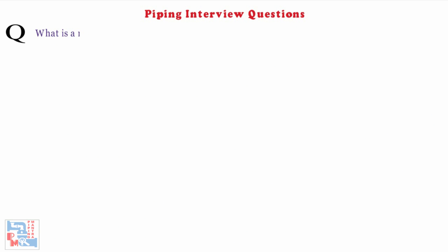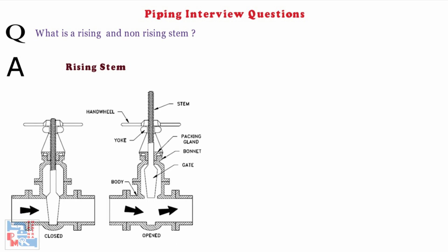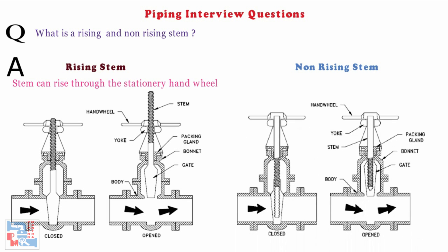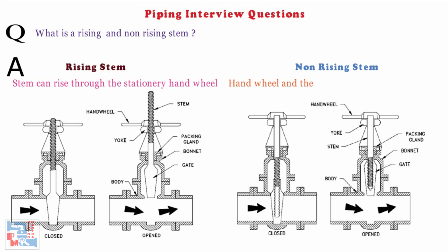Next, what is a rising and non-rising stem? In case of rising hand wheel, hand wheel can either rise with the stem or stem can rise through the stationary hand wheel. Whereas, in case of non-rising hand wheel, the hand wheel and the stem are in same position whether the valve is opened or closed. In this case, the screw is inside the bonnet and in contact with the fluid.